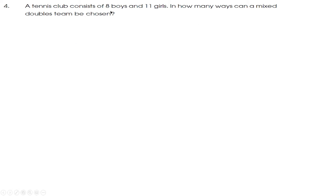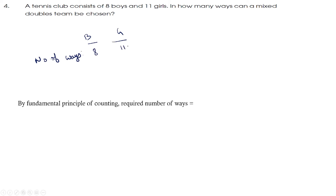Next question: a tennis club consists of 8 boys and 11 girls — in how many ways can a mixed doubles team be chosen? A mixed doubles team consists of 1 boy and 1 girl. The boy can be chosen in 8 ways and the girl in 11 ways. By the Fundamental Principle of Multiplication, the required number of ways is 8 into 11, which is 88.